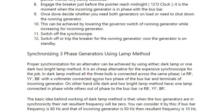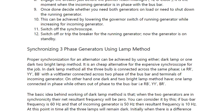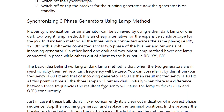Now, synchronizing a three-phase generator using the lamp method. Proper synchronization for an alternator can be achieved by using either the dark lamp or the two bright one dark lamp method. It is a cheap alternative to the expensive synchroscope. In the dark lamp method, all three bulbs are connected across the same phase — R-R, Y-Y, B-B — with a voltmeter connected across two phases of the bus bar and the terminal of the incoming generator. In the two bright one dark method, one lamp is connected in phase while the others are out of phase with the bus bar — that is, R-B, Y-Y, B-R.